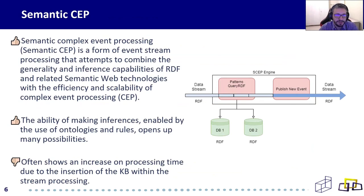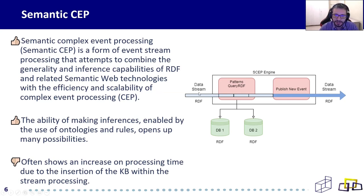So there is Semantic CEP. Semantic CEP is a form of event stream processing that attempts to combine the inference capabilities of RDF with the efficiency and scalability of complex event processing. With one query, you can query both the stream and multiple databases. One downside of Semantic CEP is that it often shows an increase in processing time due to the insertion of the knowledge base within the stream processing.